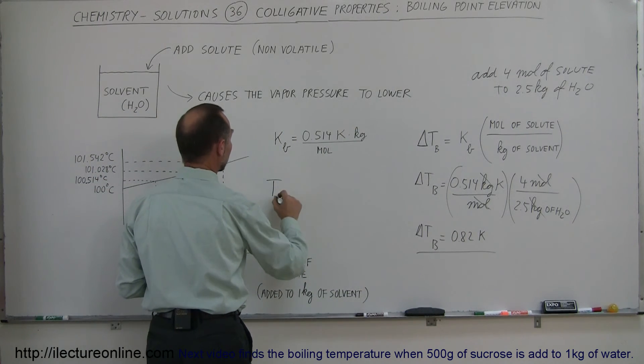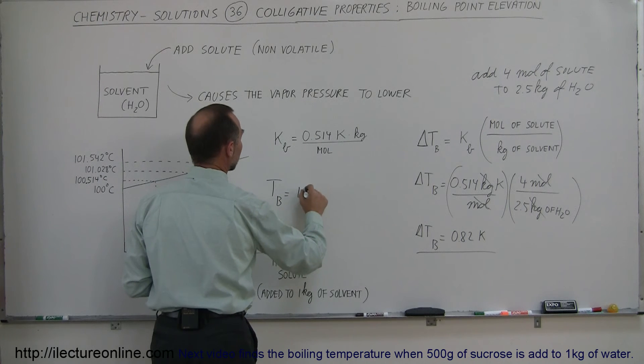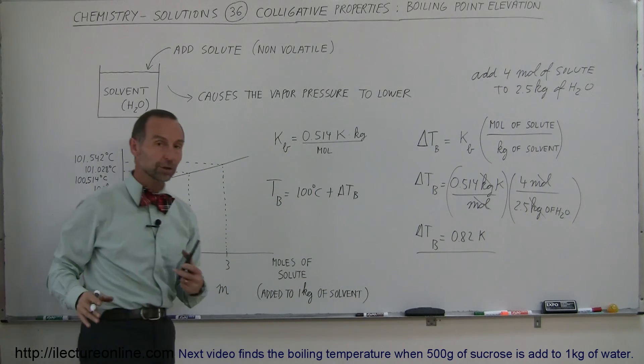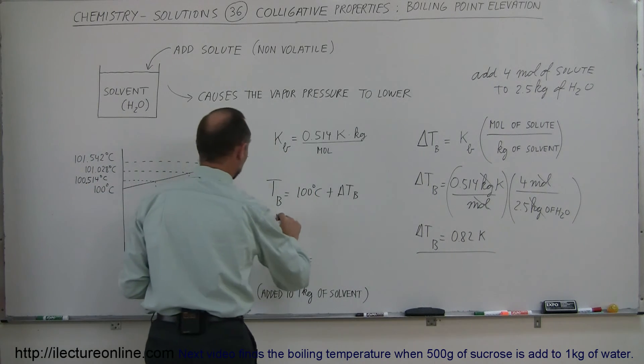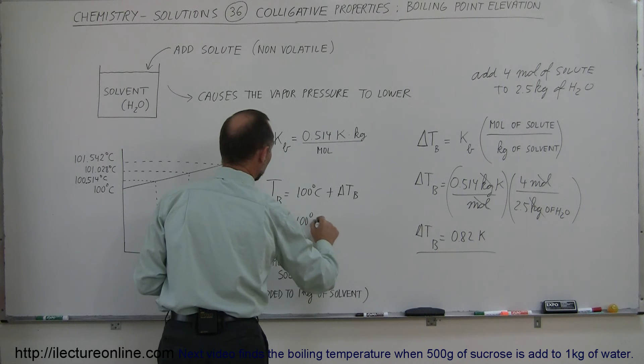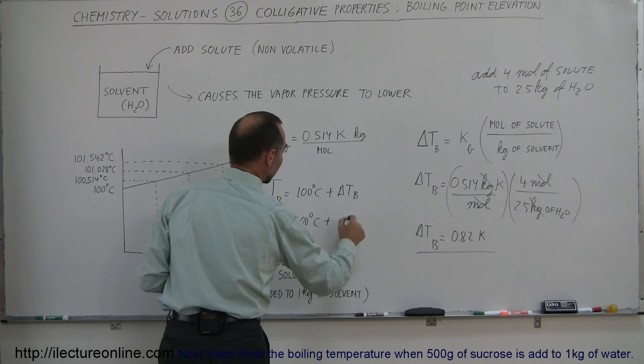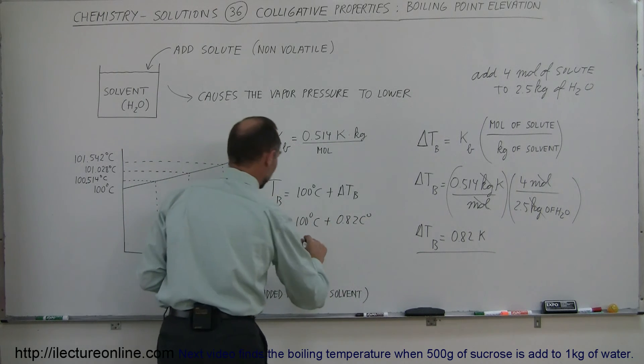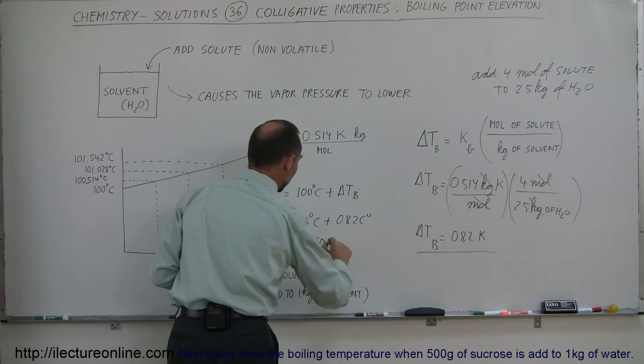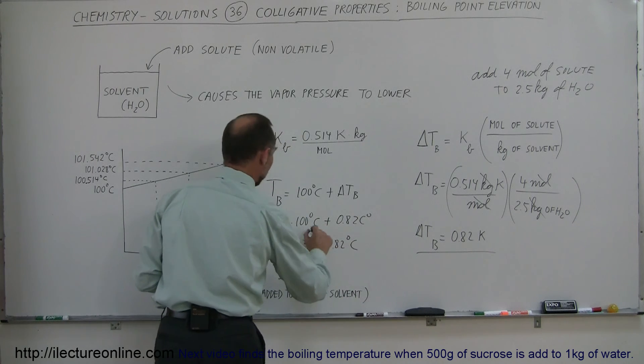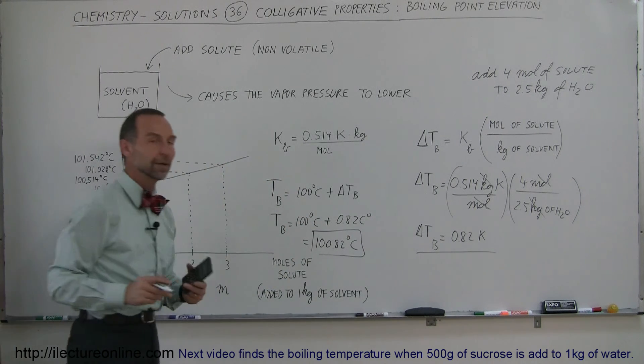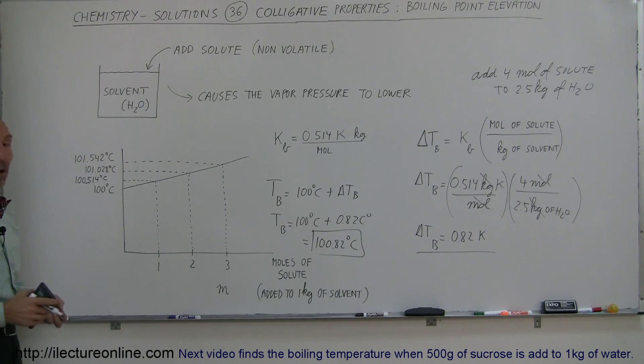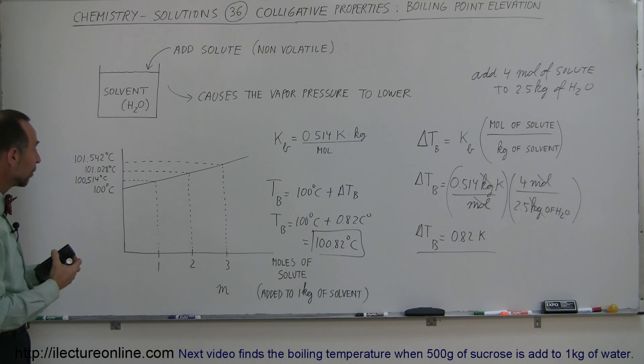Finally, we can say that the boiling point T boiling is equal to 100 degrees centigrade plus the change in the temperature caused by adding solute to the solvent. In this case, T sub B would be equal to 100 degrees centigrade plus the 0.82 centigrade degrees or Kelvin. So this would be 100.82 degrees centigrade. That would be the new boiling temperature by adding that much solute to the solvent water.